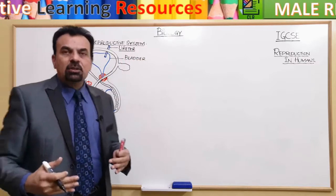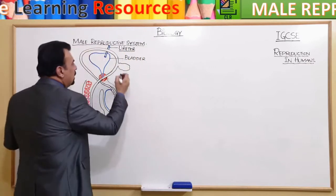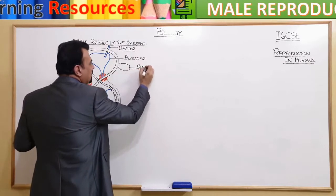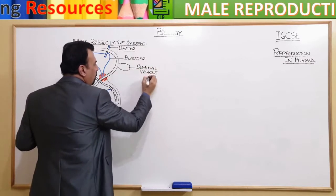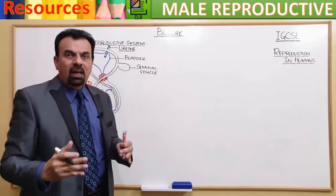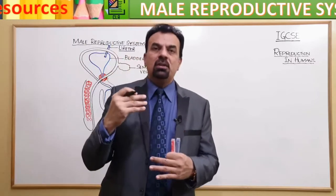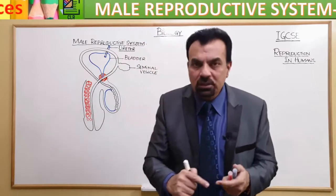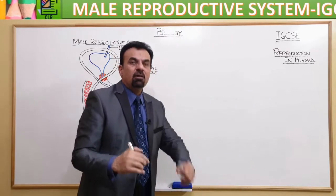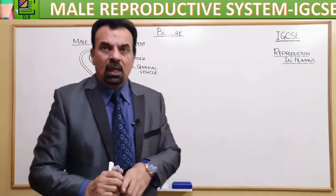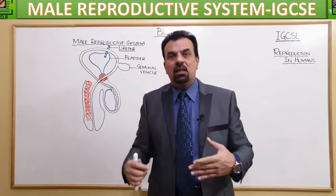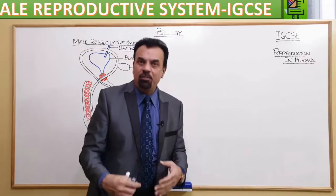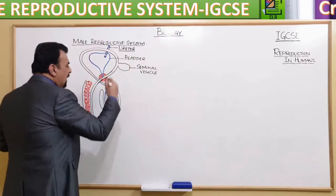The bladder's function is to store urine. Now this part is called the seminal vesicle. Its job is to produce secretions which include lubricants and nutrition for the sperm to survive. These lubricants and nutrition help sperms to survive inside the female reproductive system.